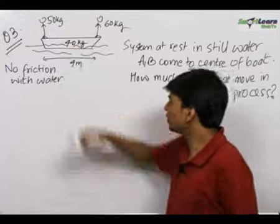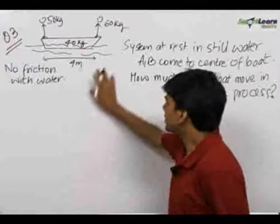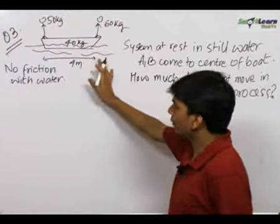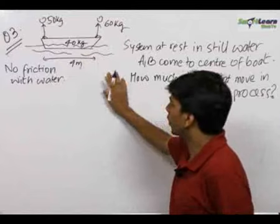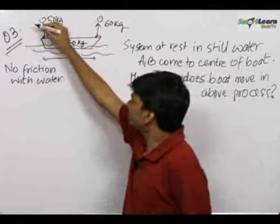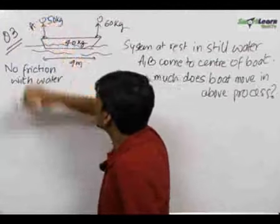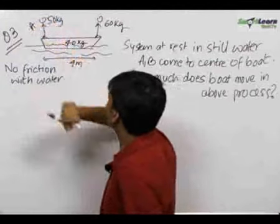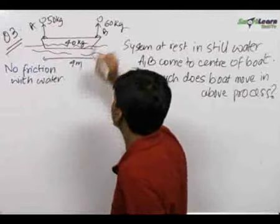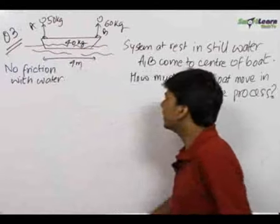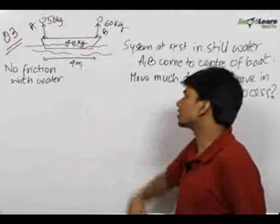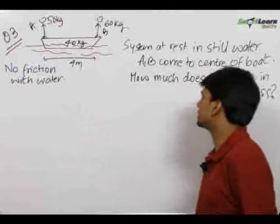In this question there is a boat standing in still water with no friction between the boat and water. Man A of mass 50 kg is standing on one side and man B of mass 60 kg is standing on the other side. The length of the boat is 4 meters and the mass of the boat is 40 kg.